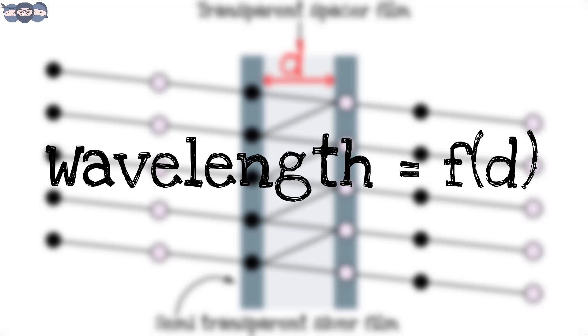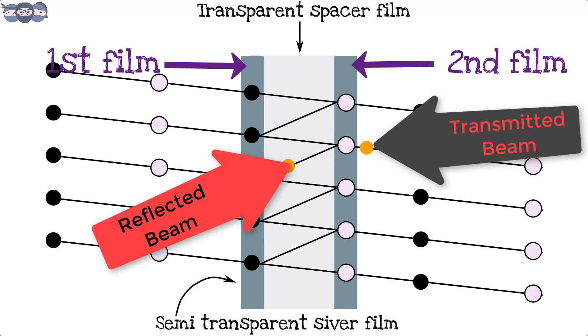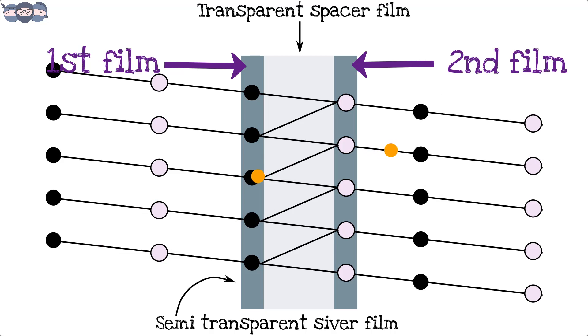The light transmitted by the first layer of silver reaches the second silver screen where it gets transmitted and some part gets reflected back towards the first layer. When the reflected wave strikes the first silver screen, it undergoes reflection and the wave moves towards the second screen.